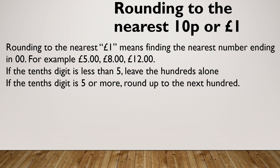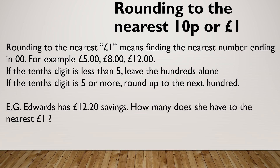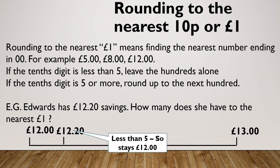When I'm rounding to the nearest pound, I want the number ending in 00 — so £5, £8, £12. And I'm looking at my 10 pences now. 5 or above, round up. 4 or below, leave alone. For example, Edward has £12.20 savings. How much does he have to the nearest pound? That 2 is less than 5, so I'm going to leave it alone — it stays as £12.